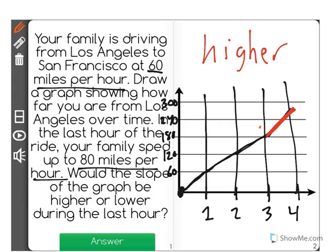So would the slope of the graph be higher or lower during the last hour? We can see the slope is steeper. That means the slope is higher during the last hour. We're going at greater speed. The greater speed you're going, the higher your slope will be.